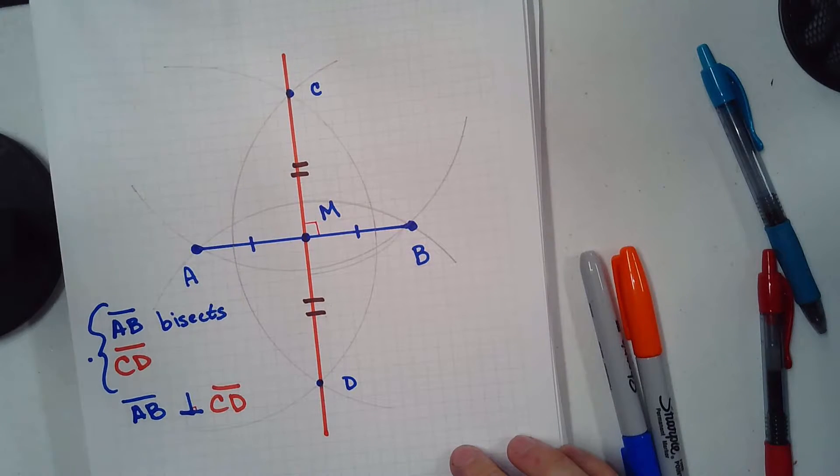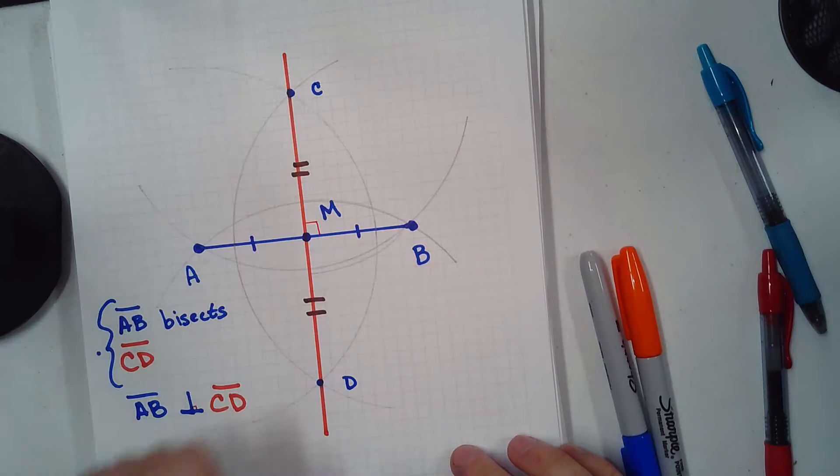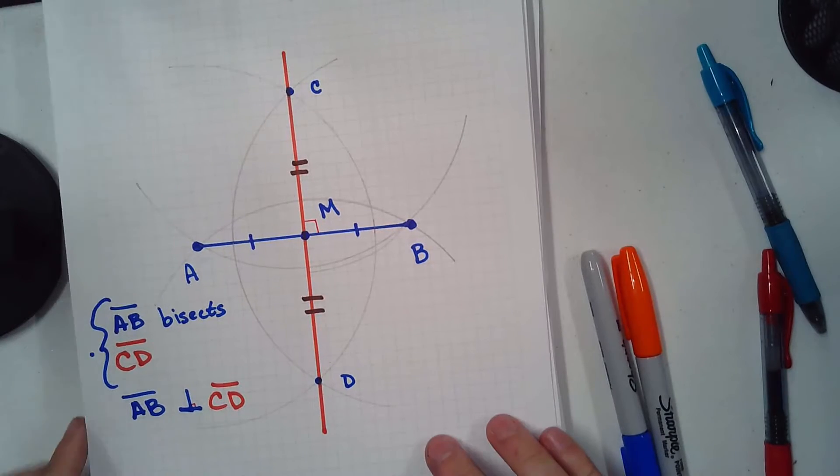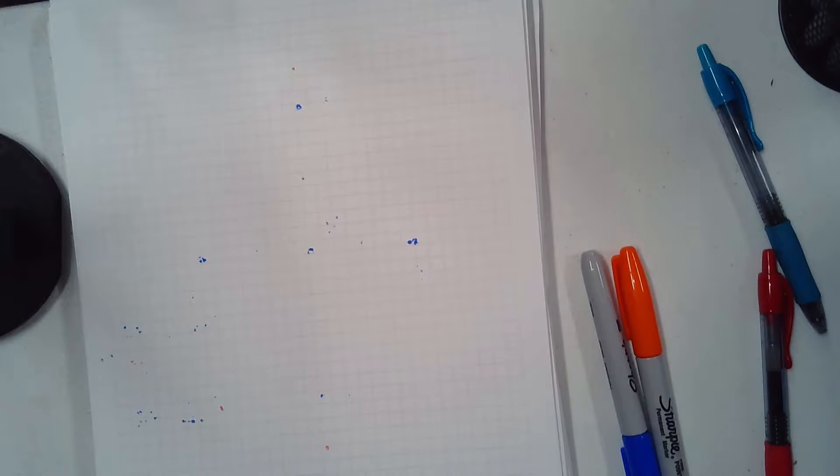All right. Questions, comments, concerns? So, what we did is we just bisected something without measuring. You can use this on a job site. Bam, bam, done, right? Let's go back to the notes.